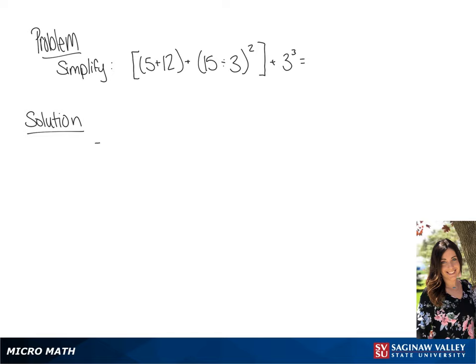We are going to use order of operations to simplify this problem. The first thing we're going to do is simplify the terms in the parentheses, as well as the 3 cubed that is outside of the brackets.